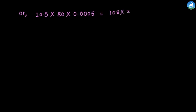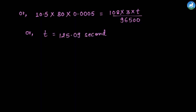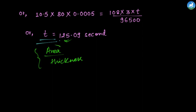Substituting all values: 10.5 into 80 into 0.0005 equals 108 into 3 into T divided by 96,500. Calculating the left side gives us the mass value, and solving for T, we can calculate the required time.